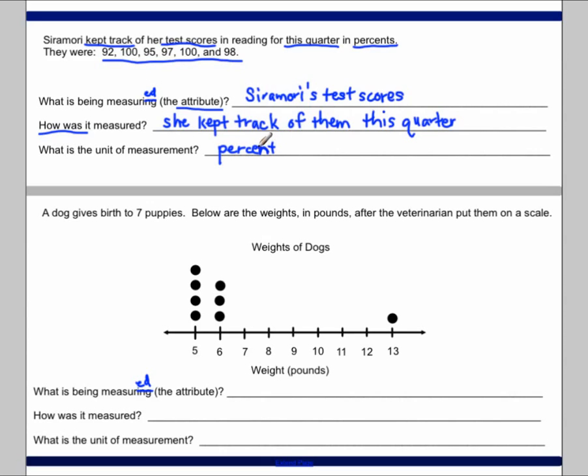So that's really important because this would be 92 out of 100. This would be 100 out of 100, 95 out of 100, 97 hundredths, 100 hundredths, and 98 hundredths, which would be very, very different if these were out of 300 points. So a score of 92 out of 100 is much better than a score of 92 out of 300. And a score of 100 out of 100 is much better than a score of 100 out of 300.